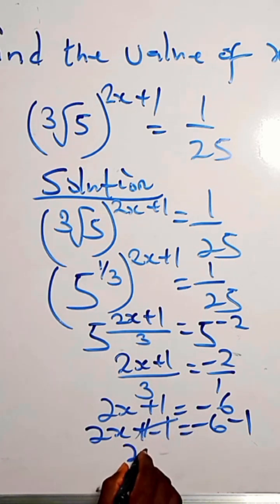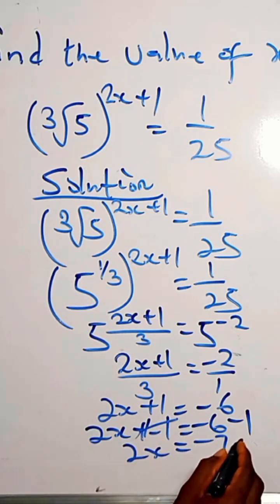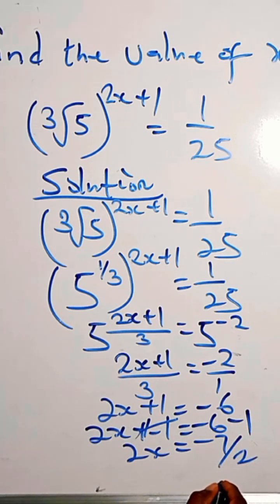So we have 2x equals minus 7. The value of x is minus 7 over 2. Thank you.